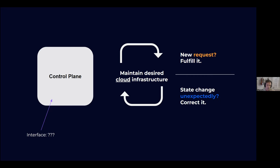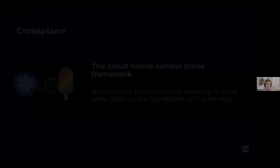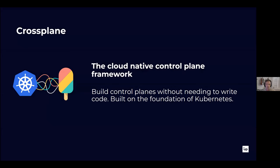That's where Crossplane comes in. Crossplane is the cloud-native control plane framework. It allows you to build control planes without needing to write any code. It's built on the foundations of Kubernetes, sitting in the Kubernetes ecosystem, and it gives you the building blocks — the framework — to build your own cloud platforms. A self-service developer platform is a kind of cloud platform, and you can use Crossplane to build it.